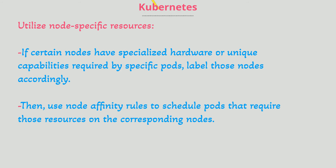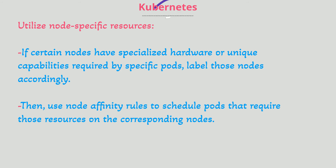Utilize Node Specific Resources. If certain nodes have specialized hardware or unique capabilities required by specific pods, label those nodes accordingly. Then, use Node Affinity rules to schedule pods that require those resources on the corresponding nodes.